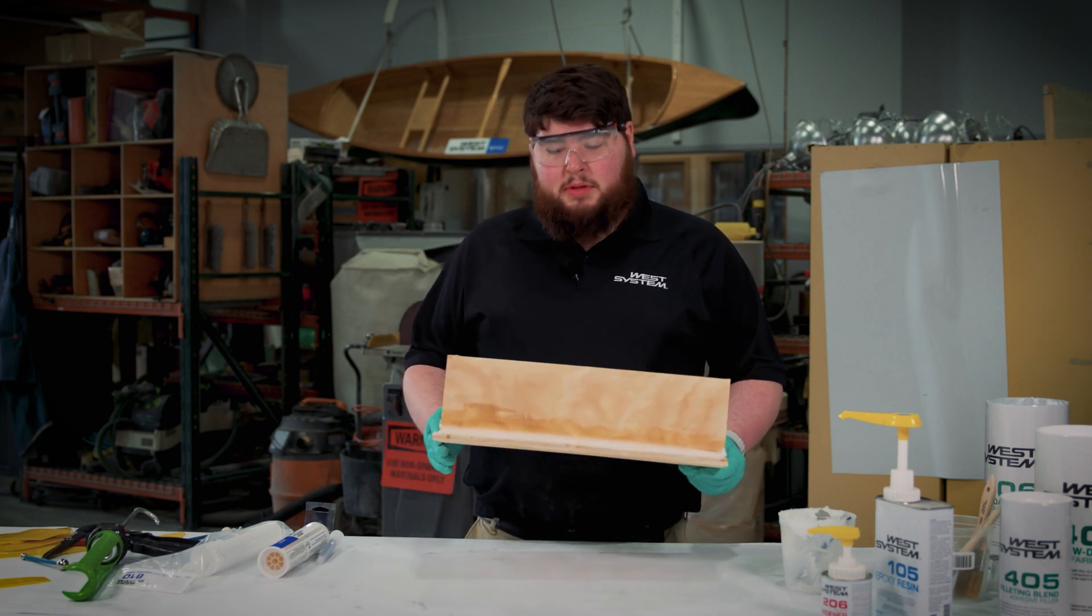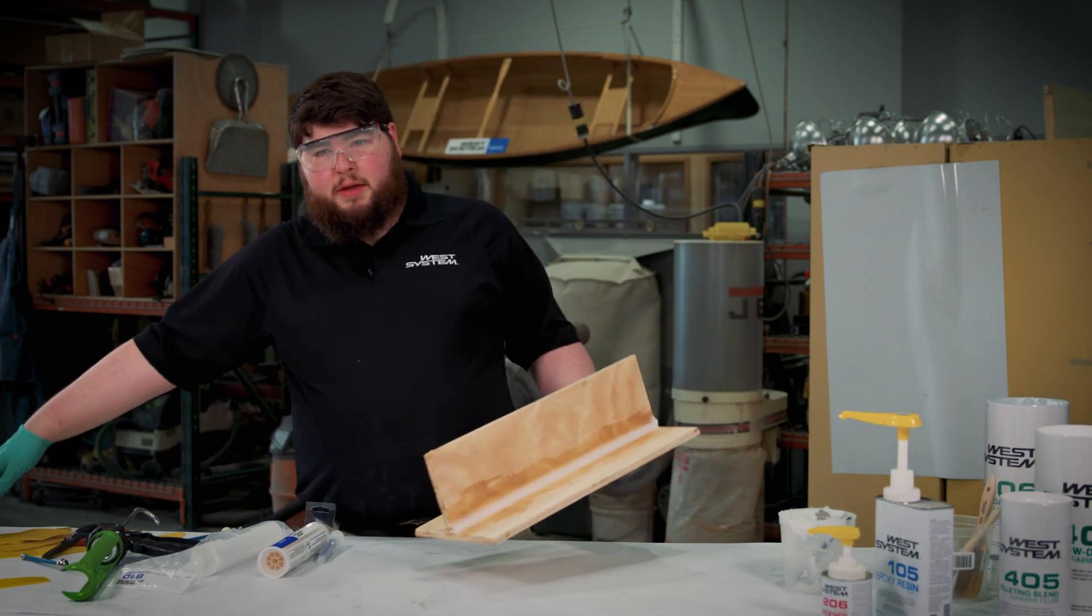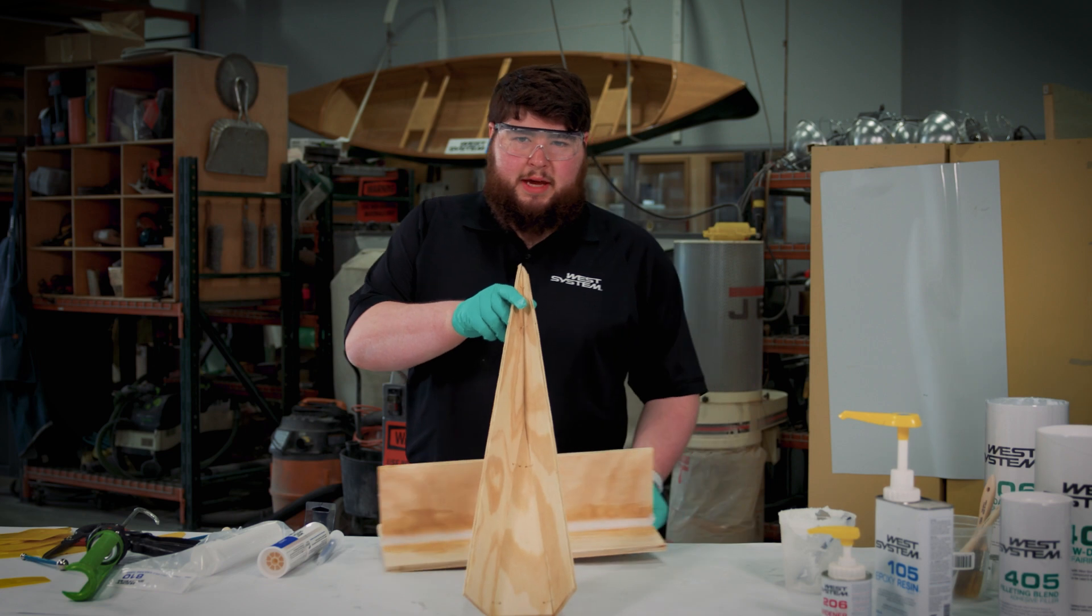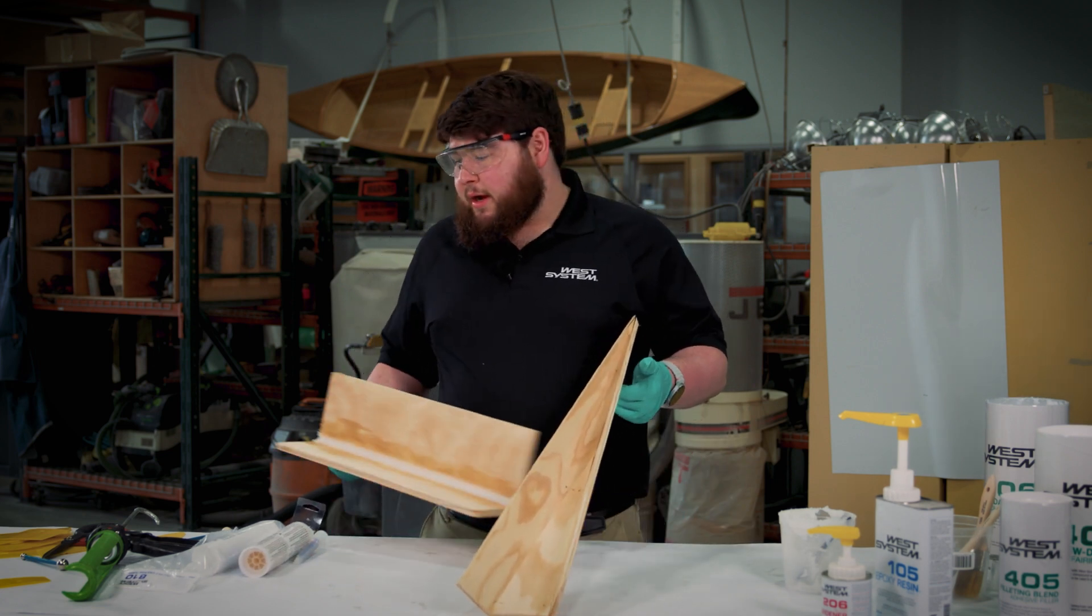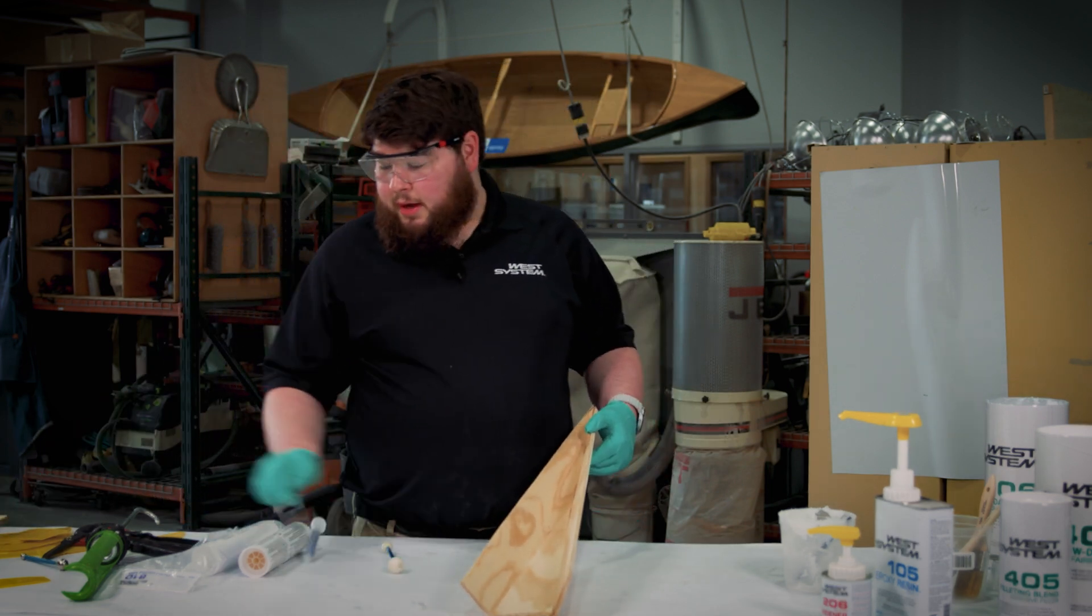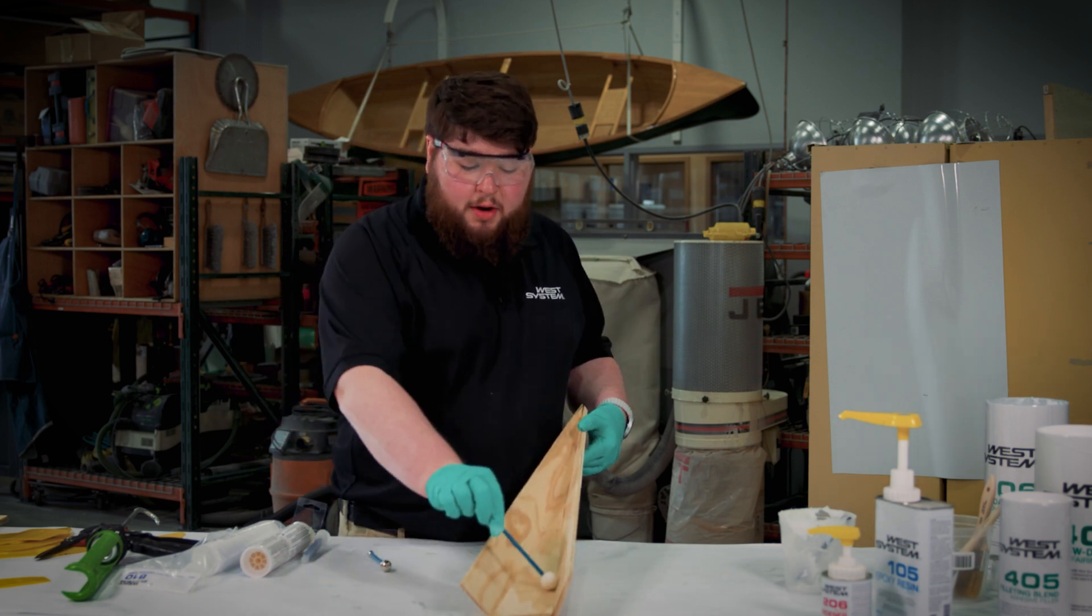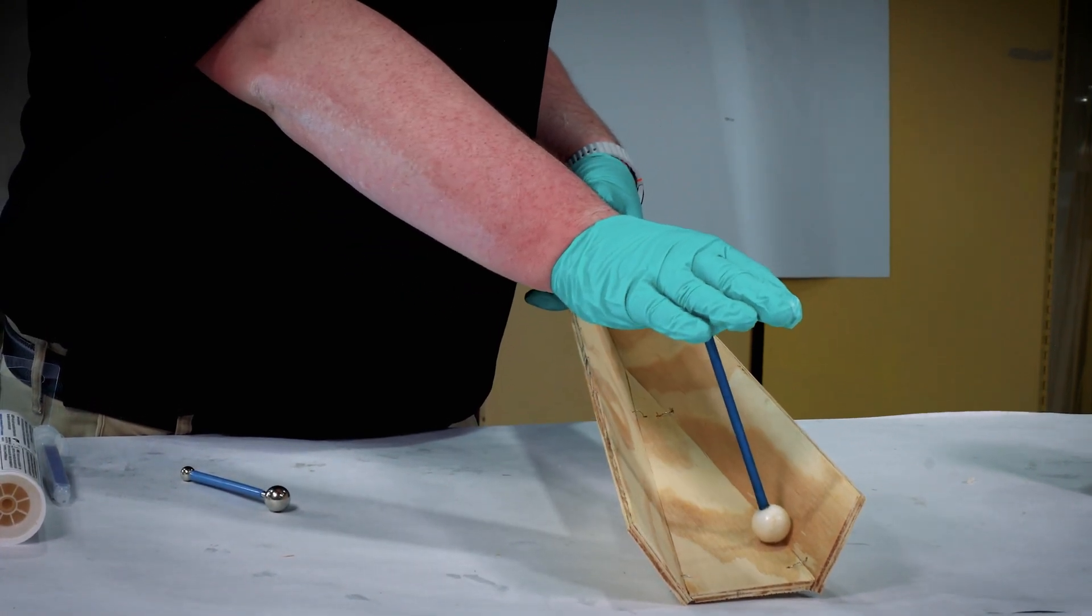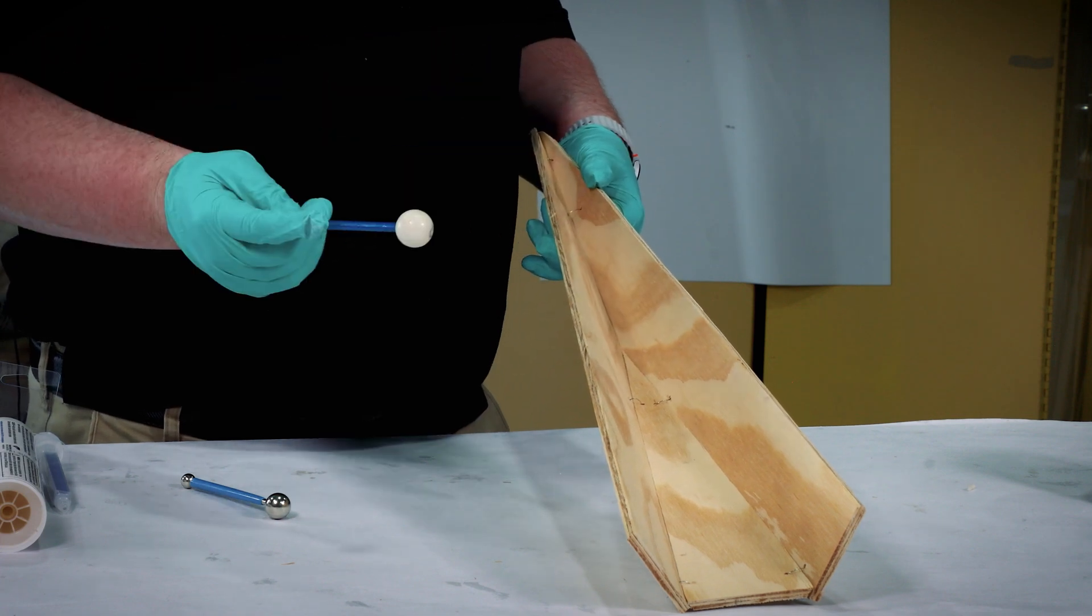So sometimes you don't get these very nice angles. You have something where you're working on your stitch and glue boat and you have something where three corners come together. And that's when it starts to get really difficult to determine how you're going to do it. A tool that I like to use are these filleting balls or the ball end tools. They're round. It doesn't matter what kind of angle that you're at. You're going to get the same radius all the way around. And they make doing these corners where more than one piece comes together much easier.